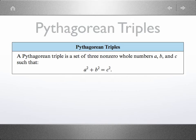Now let's talk about triples. What are they? They are whole numbers, non-zero whole numbers, that satisfy the Pythagorean theorem.